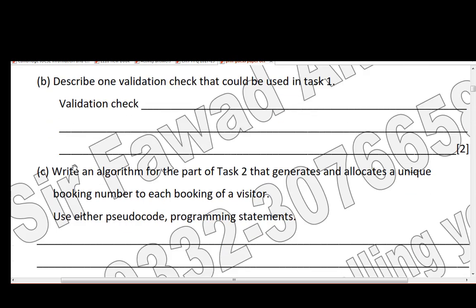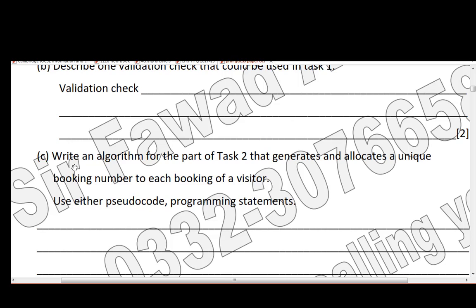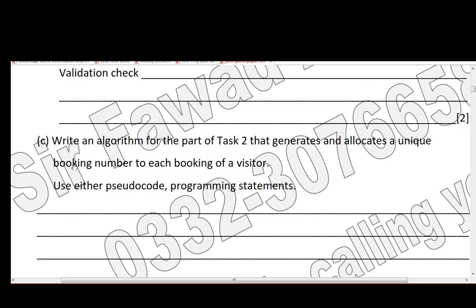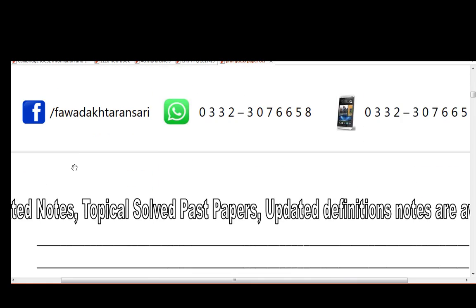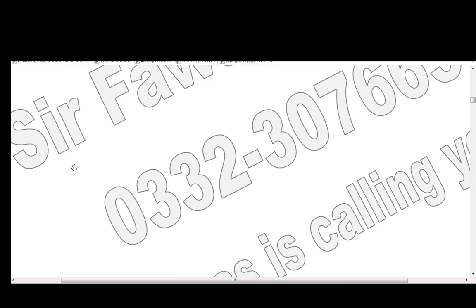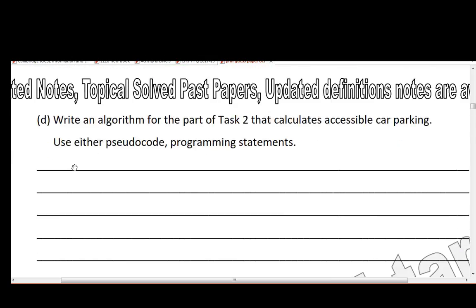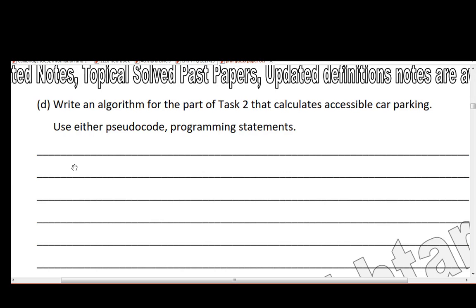Part C: write an algorithm for the part of task 2 that generates and allocates a unique booking number to each booking of a visitor. You may use pseudo code or high-level language programming statements. Part D: write an algorithm for the part of task 2 that calculates accessible car parking. Again, you can use pseudo code or programming statements to justify your answer.